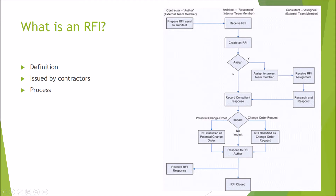The contractor issues the RFI and sends it to an architect. The architect has the choice to assign it to a project team member. The project team member researches and responds. The architect then records the consultant response and, according to the impact of the RFI, classifies it.